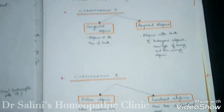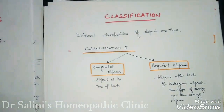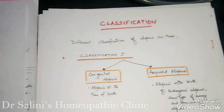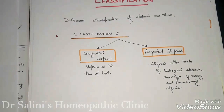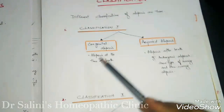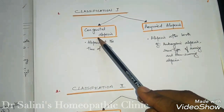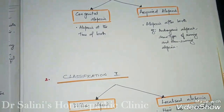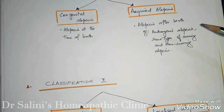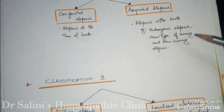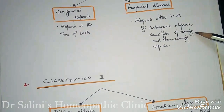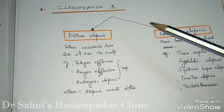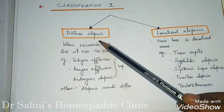Now let's look at the classification. There are different types of classification that fall under alopecia. The first broadly divides it into congenital alopecia — which we get from birth — and acquired alopecia, such as androgenic alopecia, and some types of scarring and non-scarring alopecia. The second classification covers diffuse alopecia and localized alopecia.